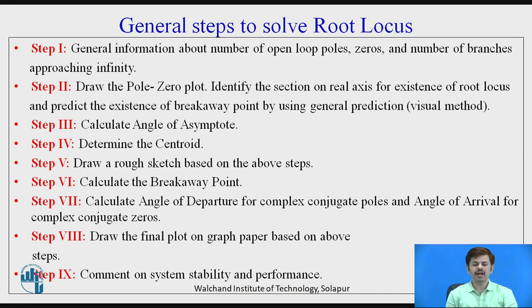In step number three, calculate the angle of asymptote. Step number four, determine the centroid. Step number five, draw a rough sketch based on the above steps. Step number six, calculate the breakaway point. Step number seven, calculate the angle of departure for complex conjugate poles and angle of arrival for complex conjugate zeros. Step number eight, draw a final plot and comment regarding the stability and performance.